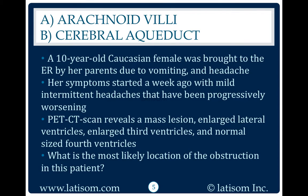PET-CT scan reveals a mass lesion, enlarged lateral ventricles, enlarged third ventricles, and normal-sized fourth ventricles. What is the most likely location of the obstruction in this patient?